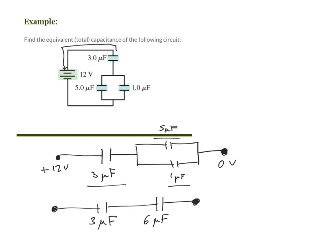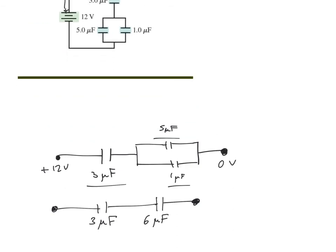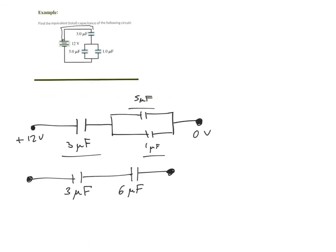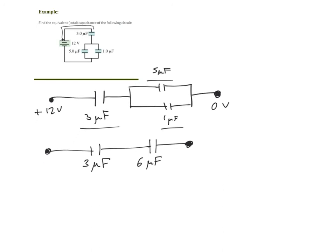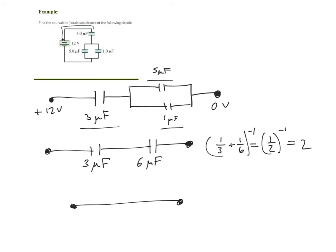Now the 3 microfarad capacitor is in series with the 6 microfarad equivalent. The remaining circuit continues on to the zero side of the voltage. In series, you add reciprocals: 1/3 plus 1/6 equals 1/2. Then you take the reciprocal of that, which gives 2. So these two capacitors together can be replaced by a total equivalent capacitance of 2 microfarads.